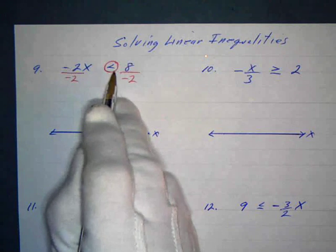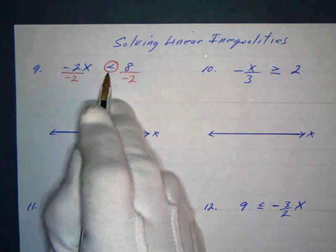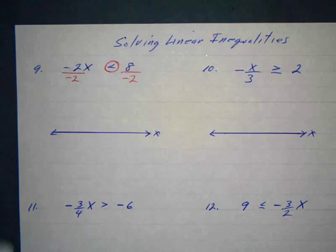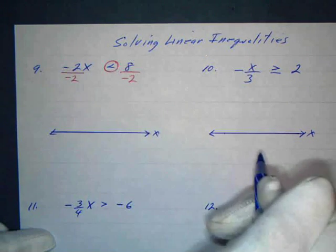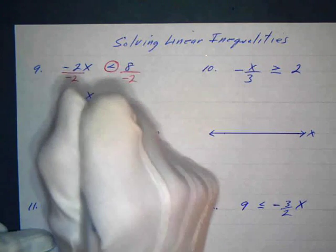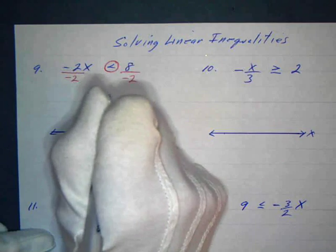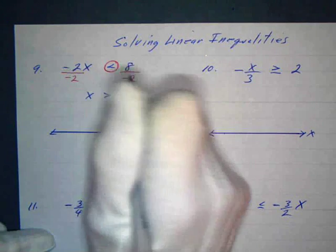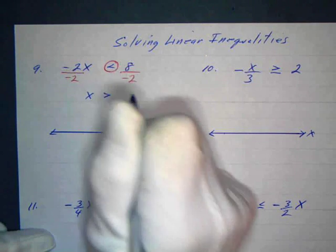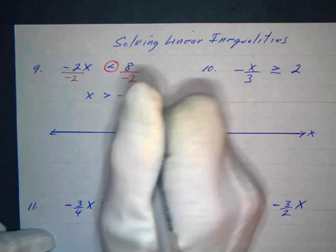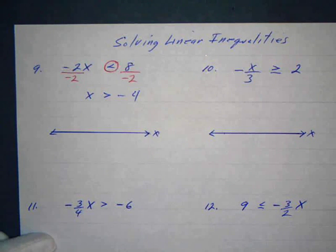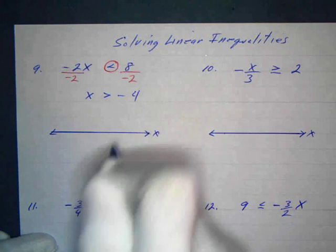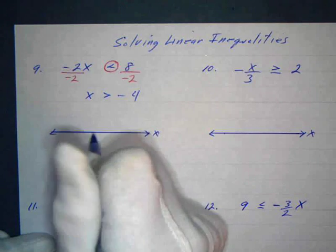The sign is pointing to the left, so it's got to be pointing to the right when I remove the circle. Negative 2 over negative 2 is just 1, so I've got x. The inequality is now pointing the opposite direction — greater than — and a positive divided by a negative is a negative, so 8 divided by 2 is 4, giving negative 4.